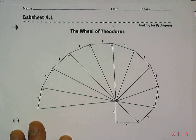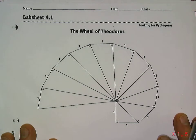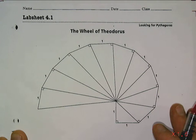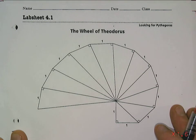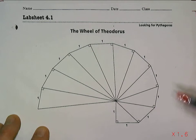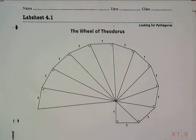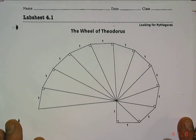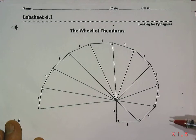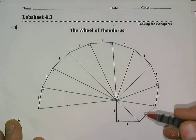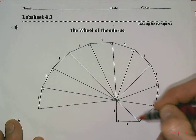This is problem 4.1 from the book Looking for Pythagoras. In this problem we are looking at something called the Wheel of Theodorus. The diagram is named for its creator, Theodorus of Cyrene, a former Greek colony. Theodorus was actually a student of the Pythagoreans — not necessarily Pythagoras himself, but a whole group called the Pythagoreans — and he designed this wheel to help understand the idea of irrational numbers and the different hypotenuse lengths and their relationships.